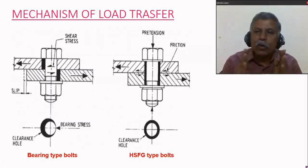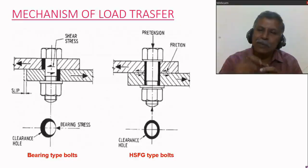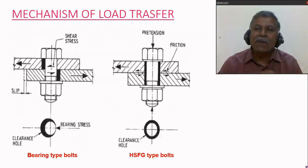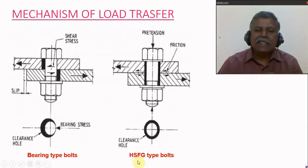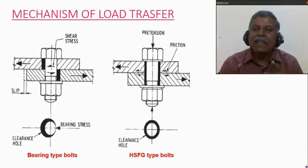The diameter of the hole is always slightly greater than the diameter of the bolt. In bearing type connections, the load will be transferred by bearing. For HSFG bolts — high strength friction grip bolts — the name itself indicates it is a friction grip bolt, and therefore the force will be transferred by friction.